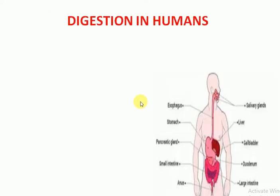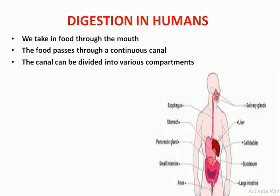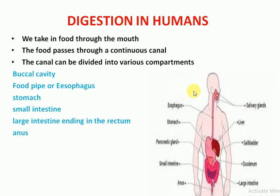Digestion in humans: we take food through the mouth. The food passes through a continuous canal which can be divided into various compartments. This is called the alimentary canal.